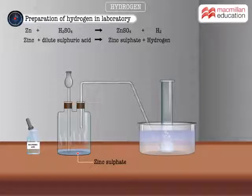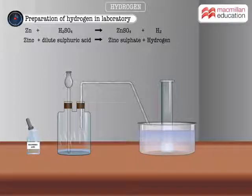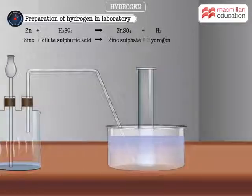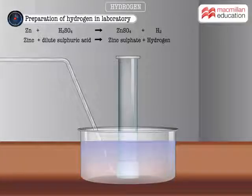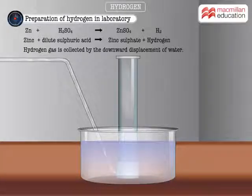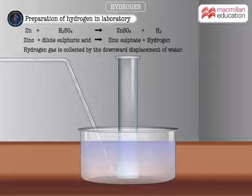Hydrogen forms an explosive mixture with air. Therefore, it is always collected by downward displacement of water.